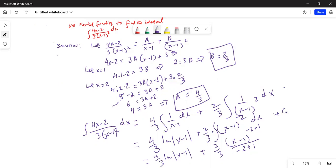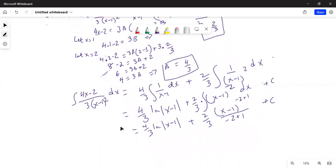And integration constant C. Then it becomes: integration of 4x minus 2 divided by 3(x minus 1) squared dx equals 4/3 ln absolute value of (x minus 1), then minus 2 plus 1 is minus 1.